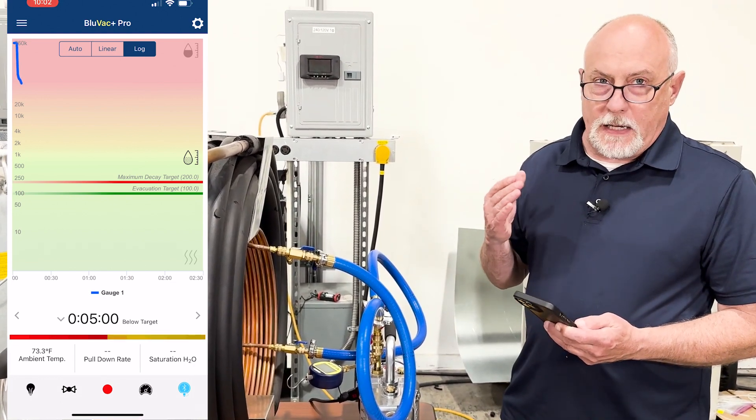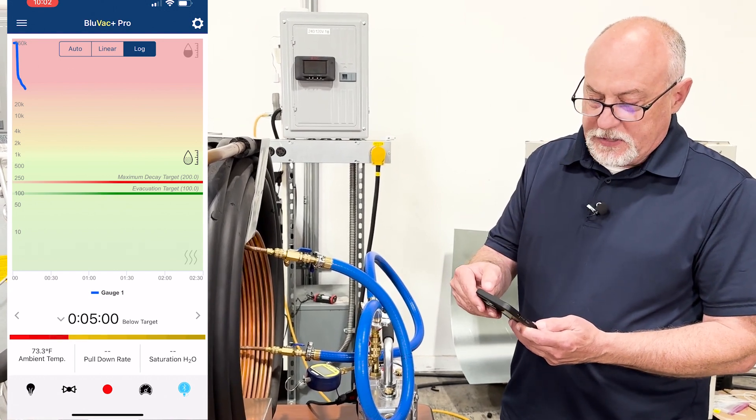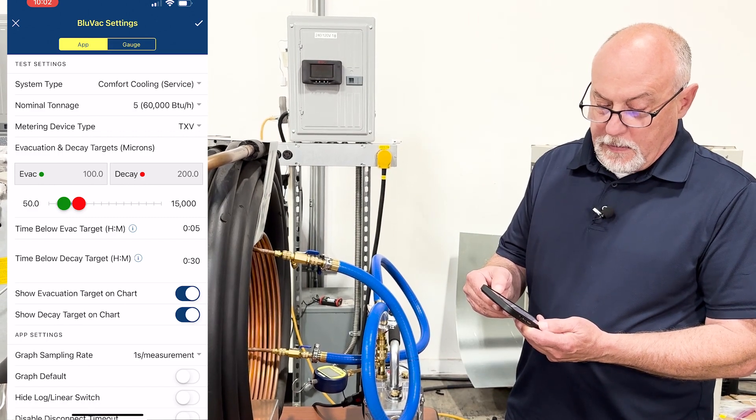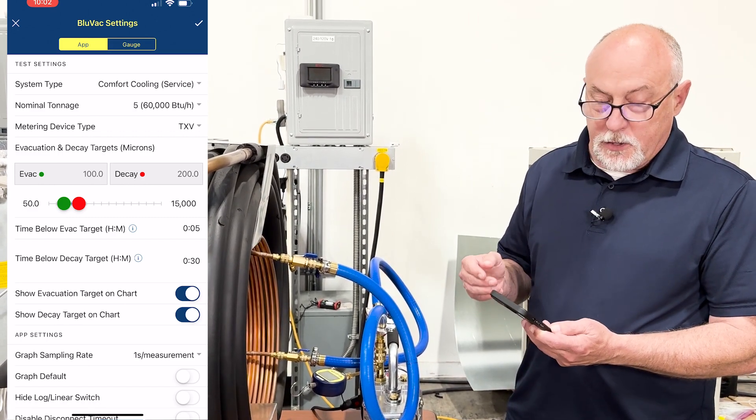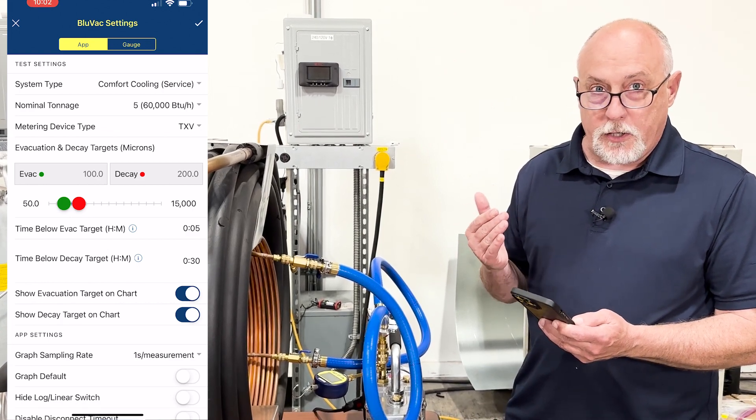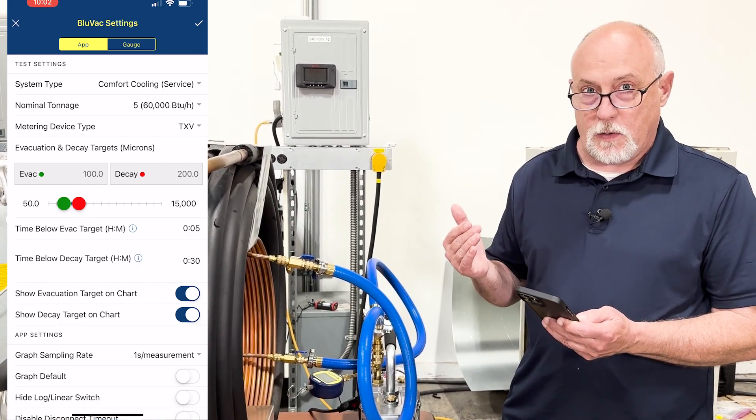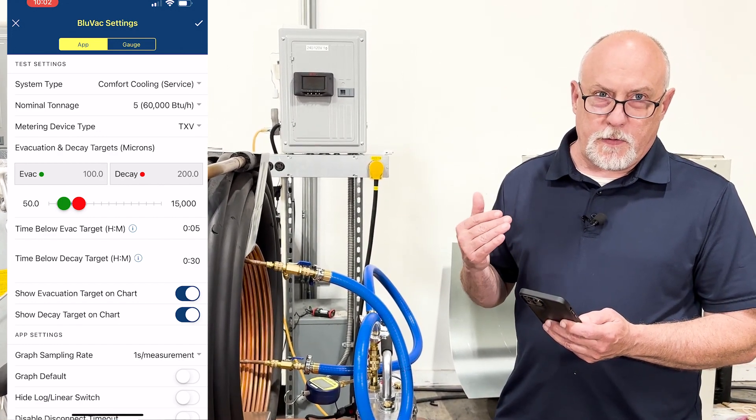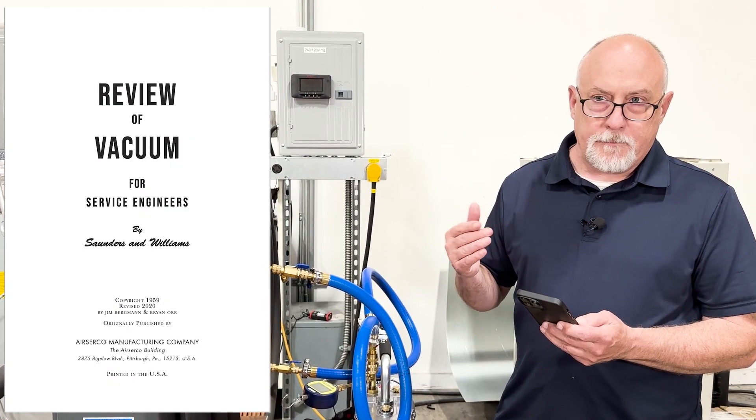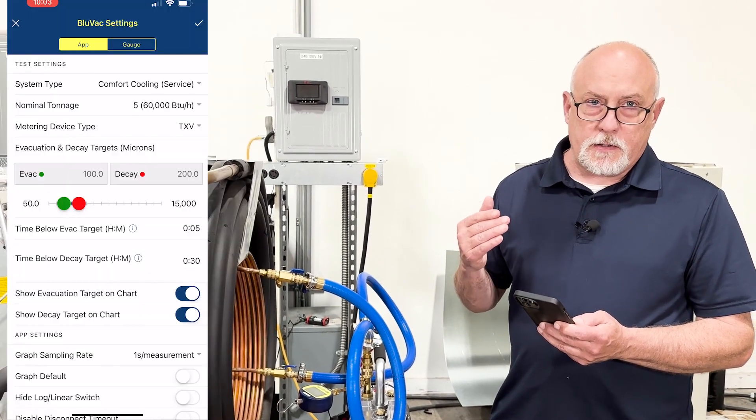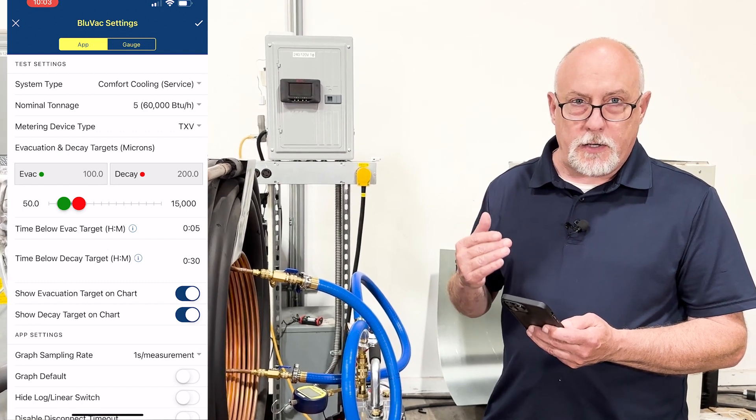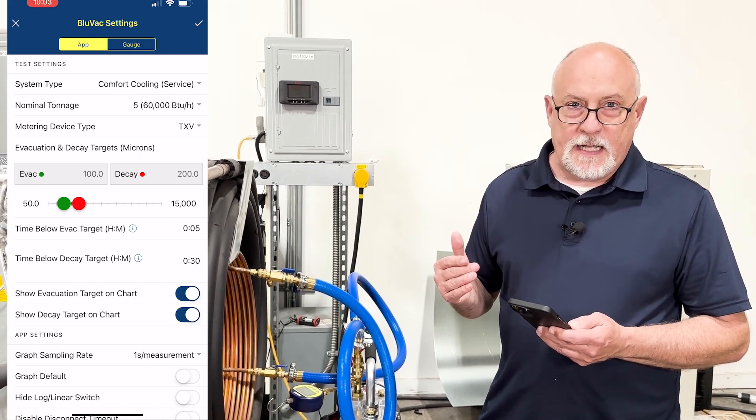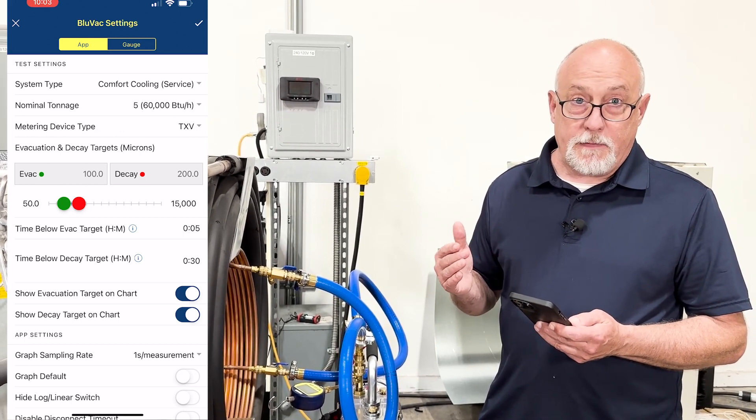This is going to pull down very quickly. Let's just go over settings now while this is coming down. I have this set up for a comfort cooling service for five tons with a TXV. And you'll notice I have my evacuation target set at 100 microns and my decay at 200. If we go all the way back into the 1950s and you go to the review of vacuum for service engineers, which I'll point out in the guide here, 100 microns was an ideal pull down with between 100 and 200 for ideal finishing vacuum. And you go, well, how do we get away from that? Why are we at 500 and 1000? And it's because we've literally forgotten how to do evacuation as an industry.